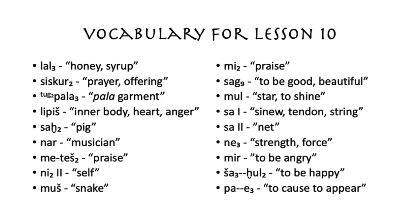Vocabulary: Lal3 — honey or syrup. Siskor2 — prayer, offering. Tug2 pala3 — a pala garment. Lippish — inner body, heart, or anger. Sakhtu — a pig. Nar — musician. Me teshtu — praise. Nitu, second meaning — self. Mush — snake. Metu — praise. Sag9 — to be good, beautiful. Mo — star, or to shine.